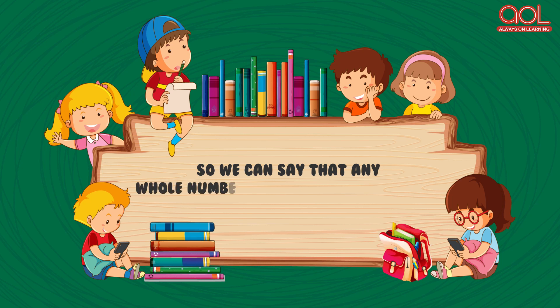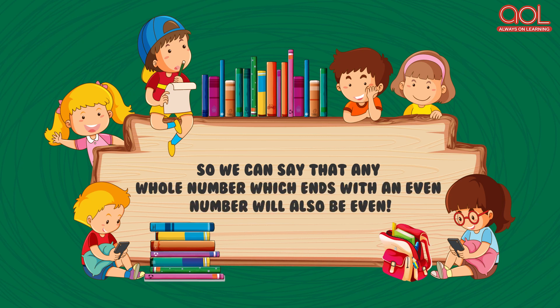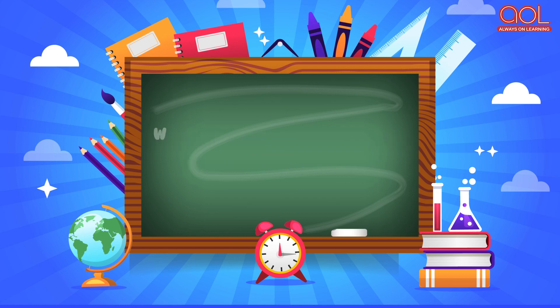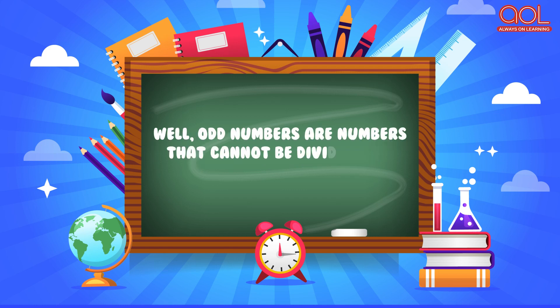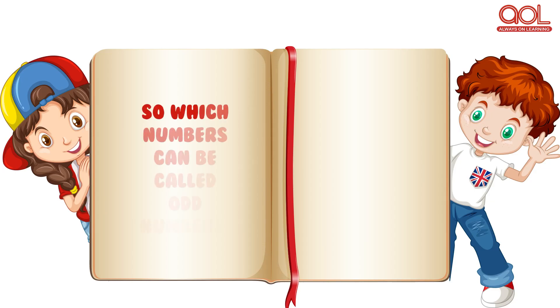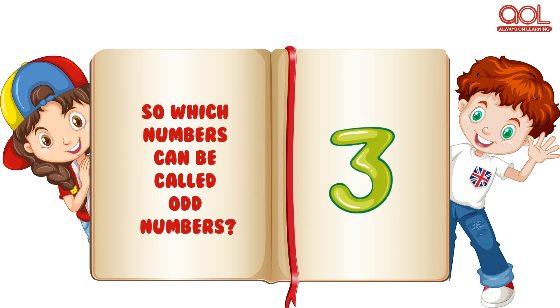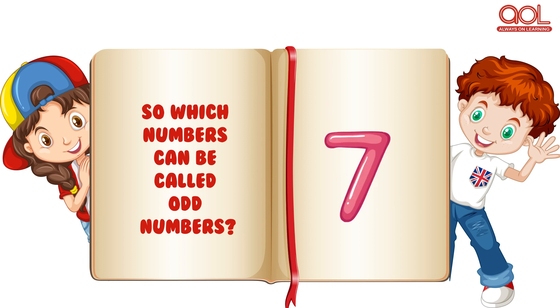So, we can see that any whole number which ends with an even number will also be even. Now, you must be thinking, then what are odd numbers? Well, odd numbers are numbers that cannot be divided into two equal parts. So, which numbers can be called odd numbers? 1, 3, 5, 7 and 9.